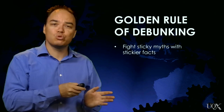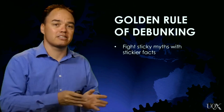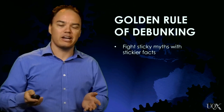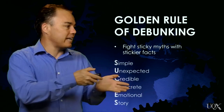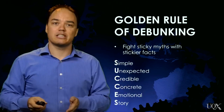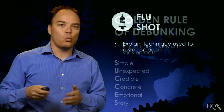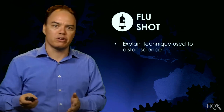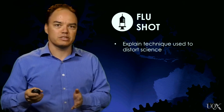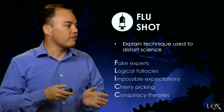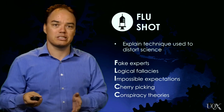First, the golden rule of debunking is to fight sticky myths with even stickier facts. We need to explain our science simply in a compelling way. The acronym SUCCESS is a useful checklist for making sure your science is sticky. Second, we need to explain how the myth is wrong. This involves explaining the technique or fallacy used to distort the science. The acronym FLIC provides a useful framework for explaining the characteristics of denial.